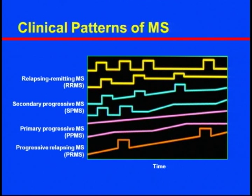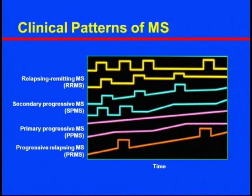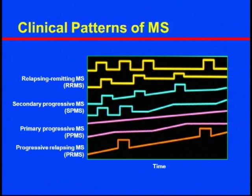Over 10 years, maybe 50% become secondary progressive. But looking at long-term studies over a 25-year window, maybe 95% will become secondary progressive. Progression seems inevitable, but the question is how do we manage it.